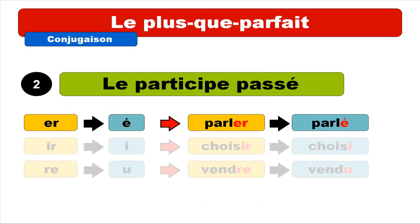The second part is le participe passé. All verbs from the first group ending with ER will turn into é. The example here is parler, ending with ER — you take away the ER and change it with the E accent aigu. The pronunciation is the same: parler, parlé, but you write it differently.